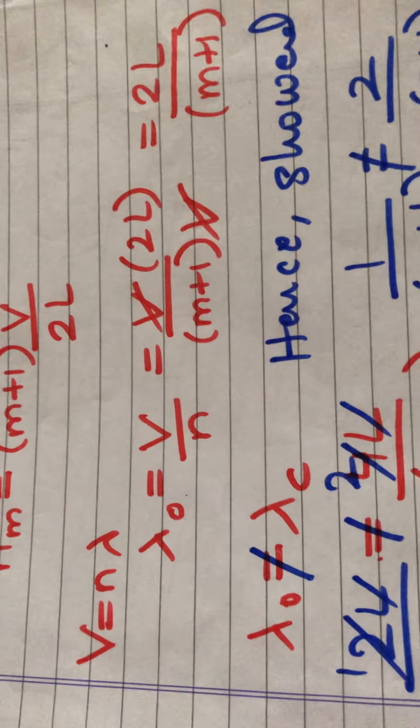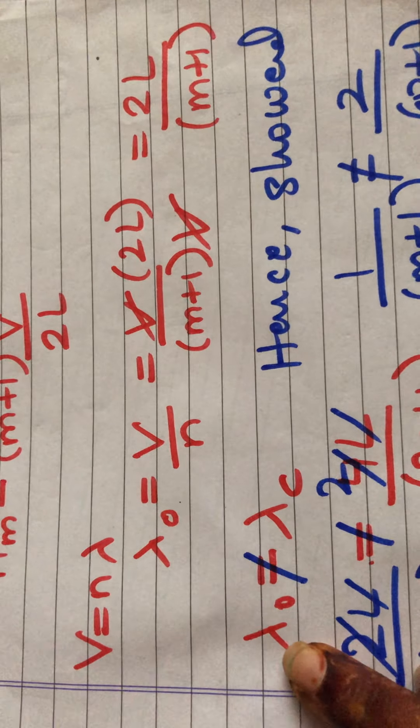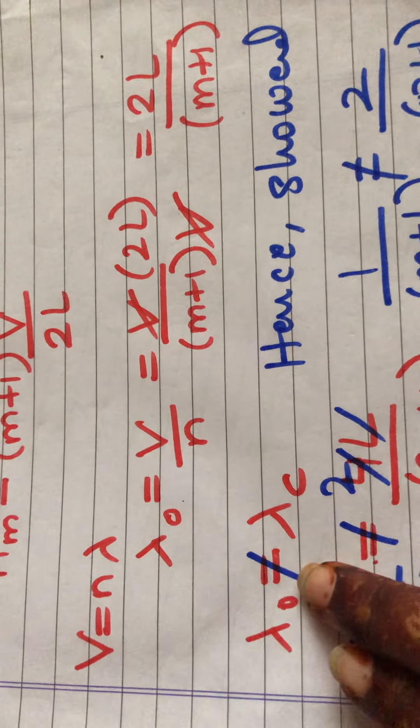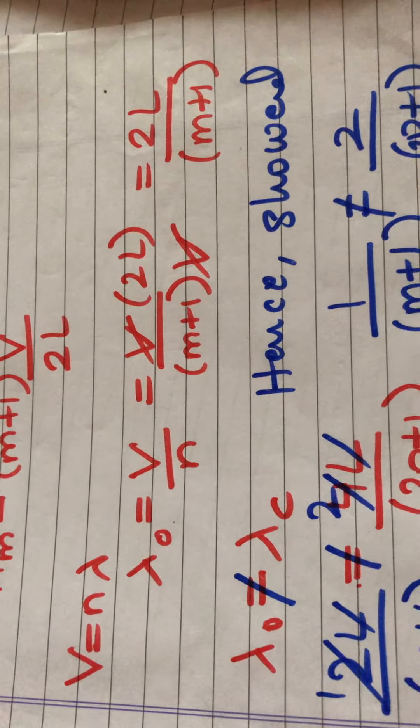No mode — koibi mode — of the open pipe is equal to any mode of the closed pipe. Hence showed.